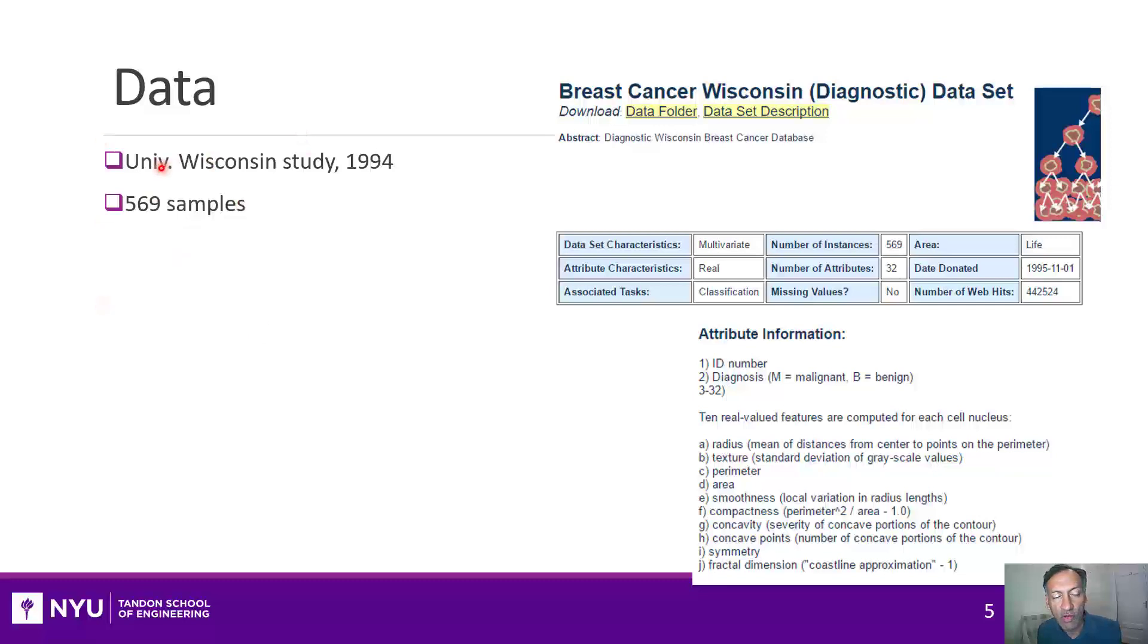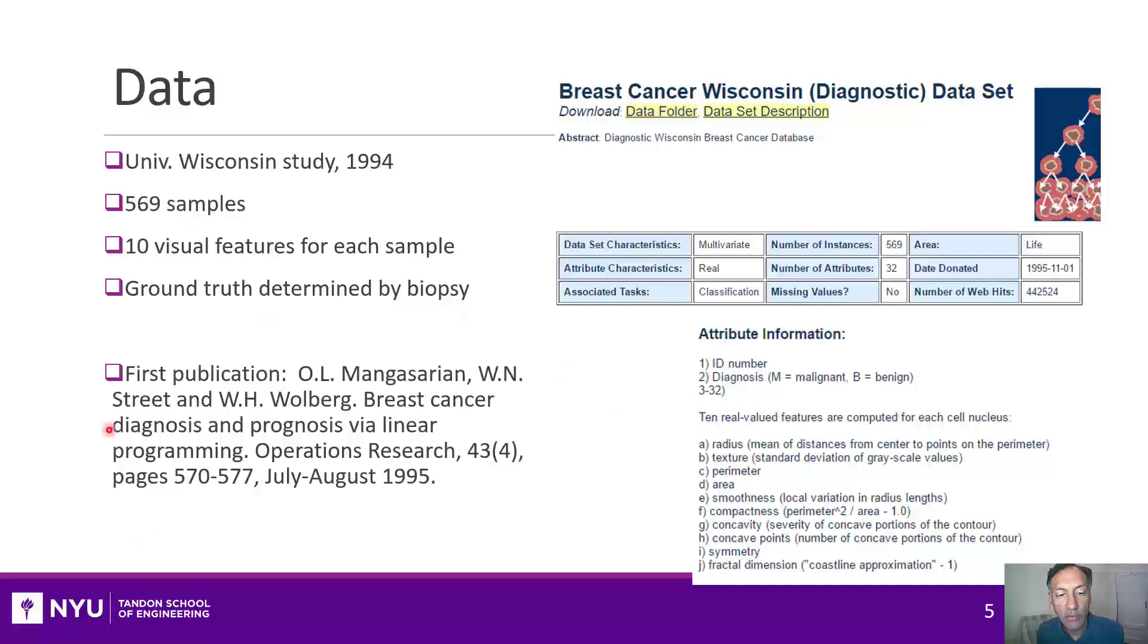In this data set, it's relatively small. There are about 569 samples. There are 10 visual features. So, instead of getting the image of the sample itself, the cytopathologist has already extracted key features, like the radius, texture, and so on. For each sample, the ground truth was determined by a more comprehensive biopsy. So, we can use that as the target variable. The first publication that was done on this data set dates back to about 1995, and I'll return to that at the very end of this lecture.